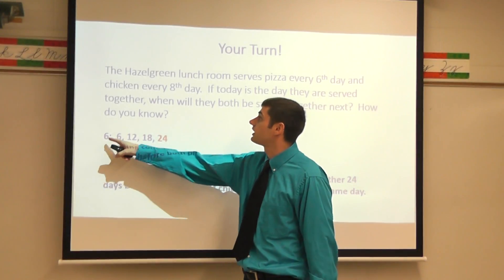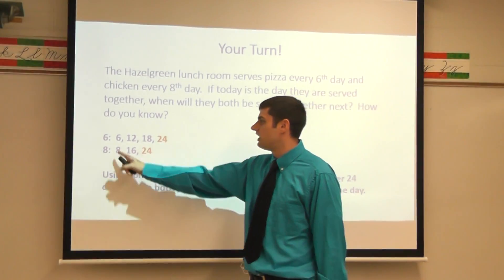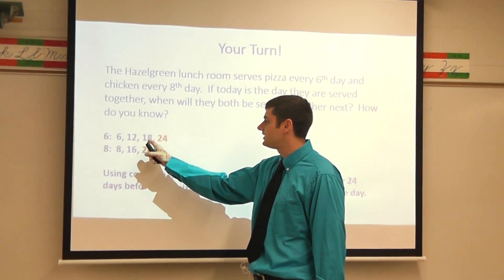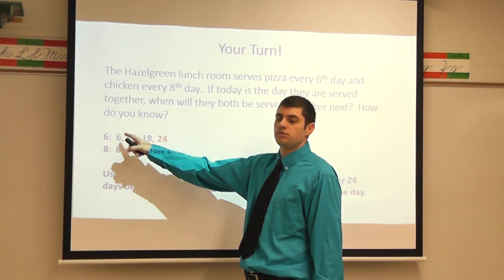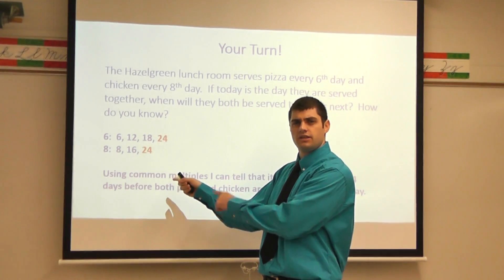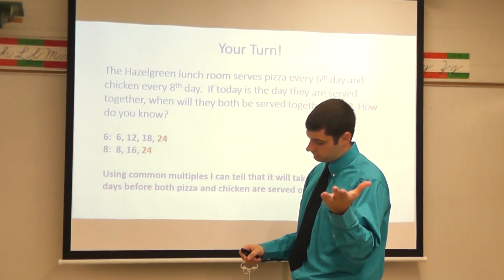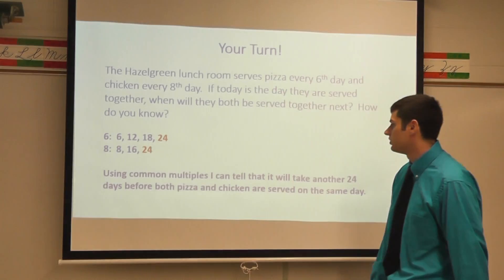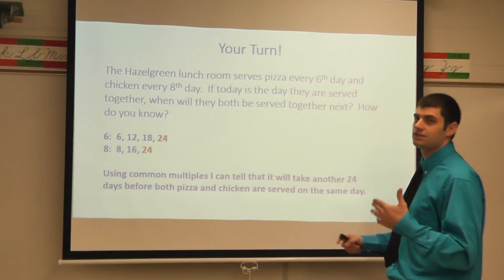I knew that pizza was served every sixth day and chicken every eighth day. So in another 6 days they'll serve pizza; 12 days will be a pizza day; 18 will be a pizza day; 24 will be a pizza day. For chicken: it'll be served on day 8, then day 16, then day 24. What do we call that? This is a common multiple — and actually it's the LCM, which stands for Least Common Multiple. Our least common multiple is 24, so using common multiples I can tell it will take another 24 days before both pizza and chicken are served on the same day.